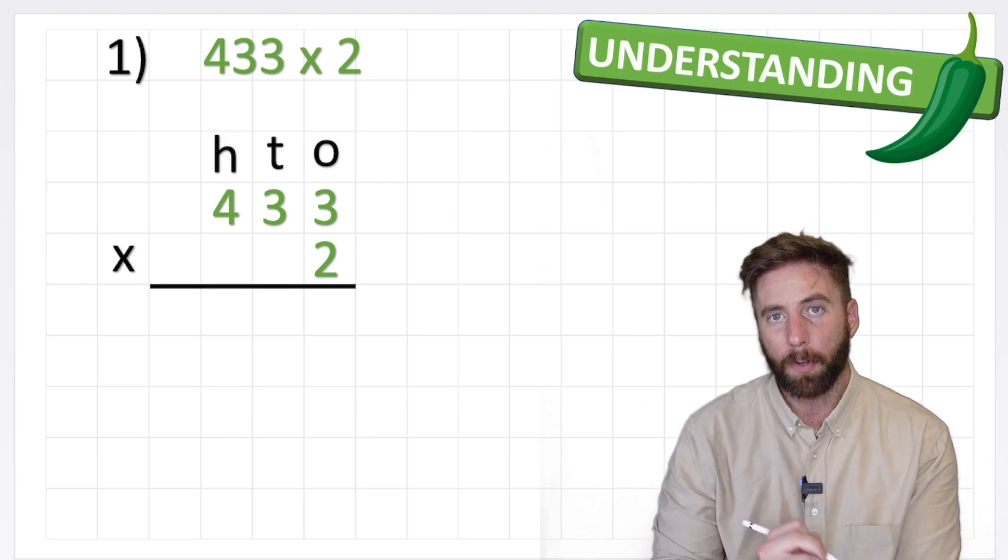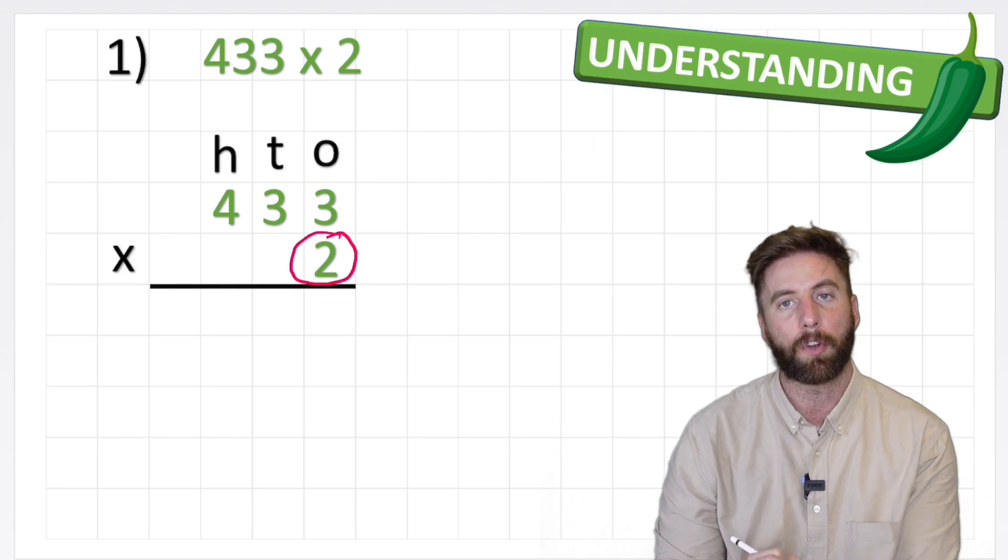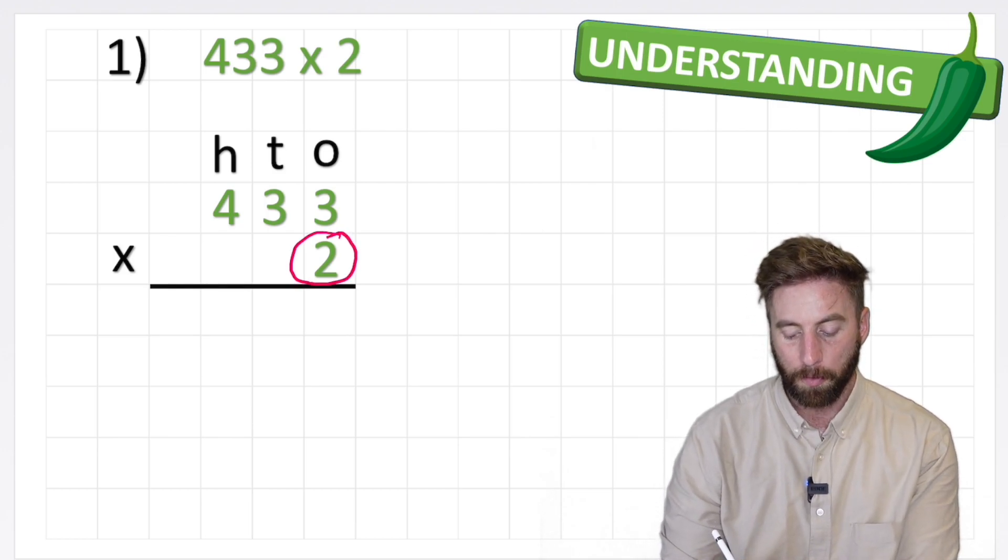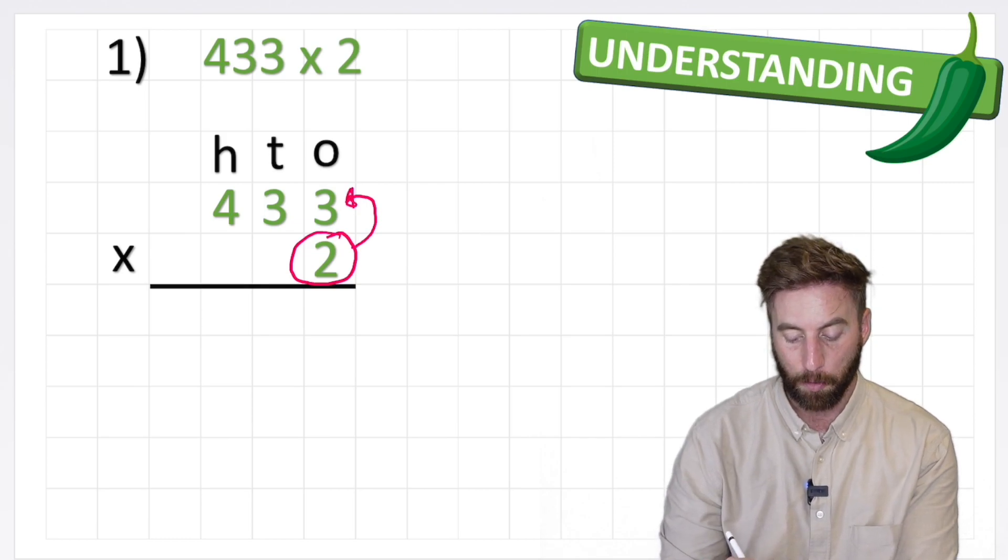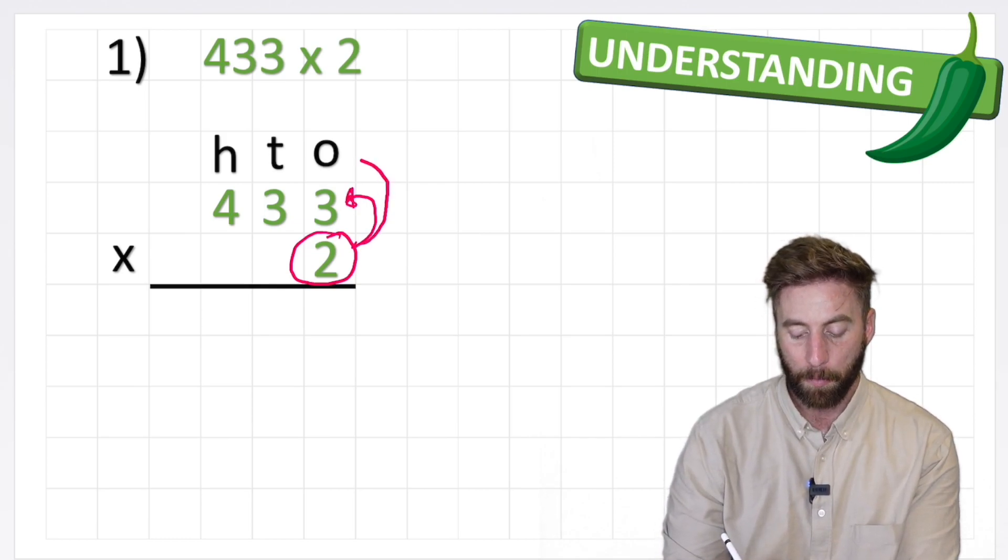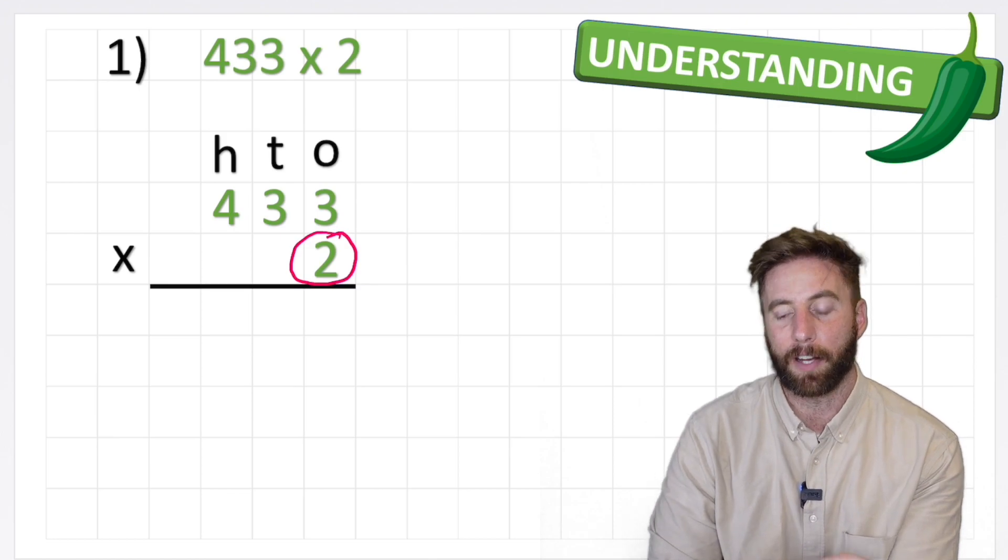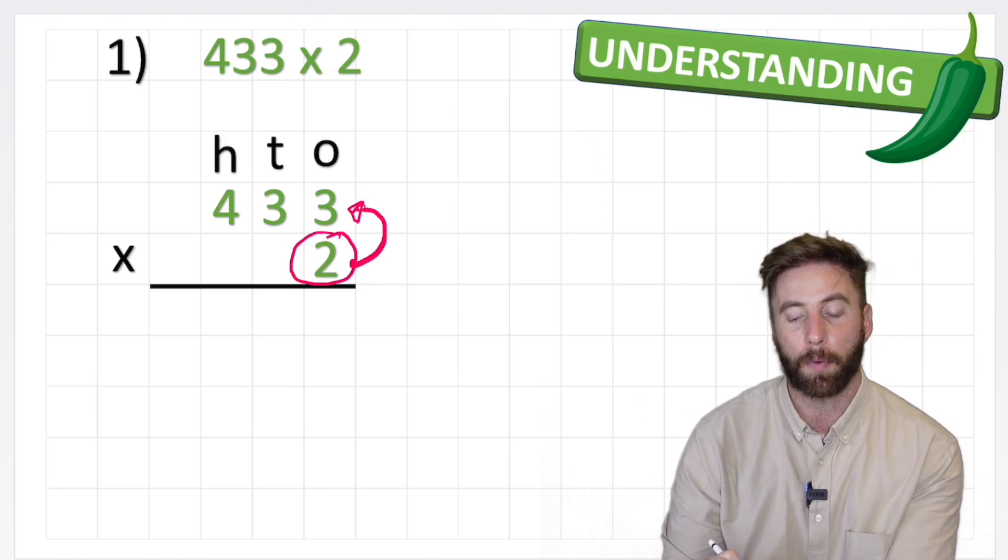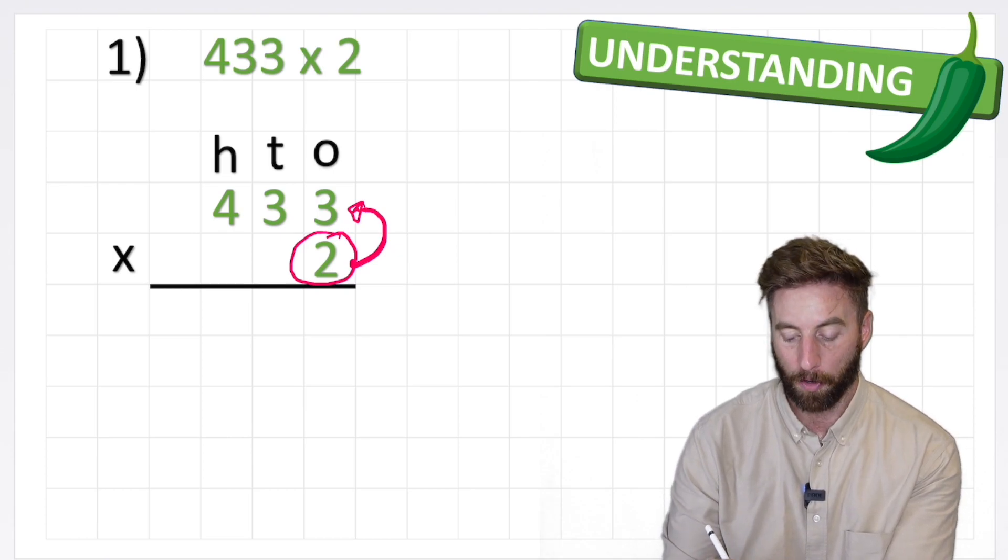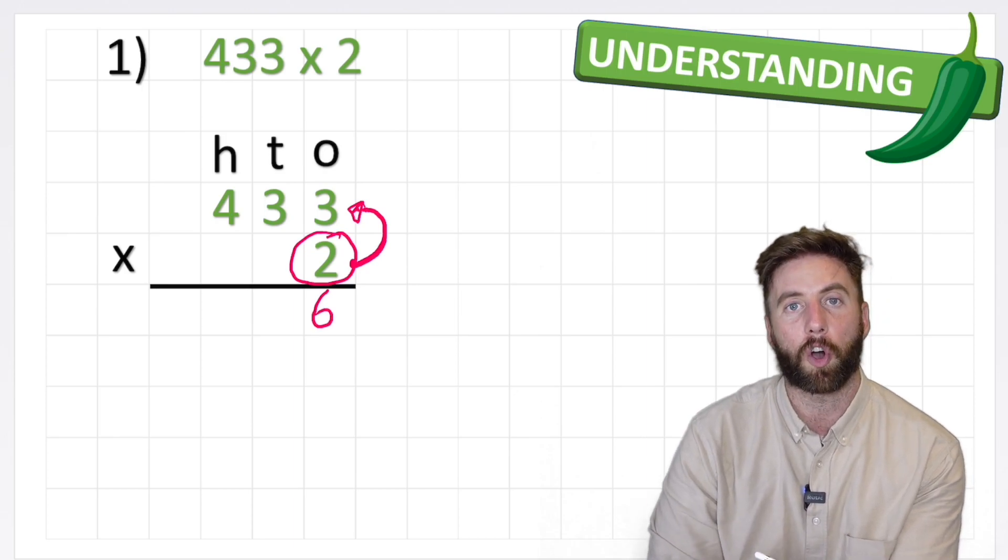So where to begin? Well, I'm going to look at my smallest value and I'm going to look at this second row, so I'm looking at this 2. And what I want to do is multiply it by the smallest value in the top number, which in this case would be the 3, and then work my way up. Multiply it by the other 3 and then finally multiply it by the 4. So let's do that in order. 2 multiplied by 3 leaves me with 6, 6 ones. So I put my 6 in the answer row in the ones column.